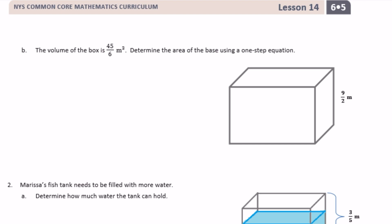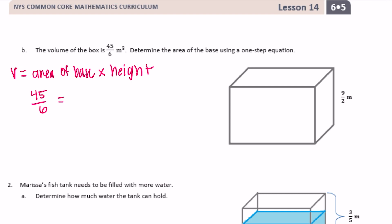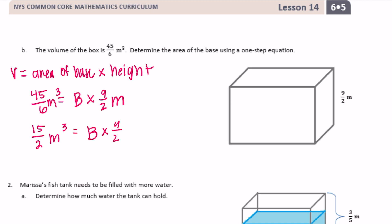Part B: the volume of the box is 45/6 meters cubed. Determine the area of the base using a one-step equation. Volume equals area of the base times height, so 45/6 equals the area of the base times 9/2 meters. Reduce 45/6 by dividing both by 3 to get 15/2. So 15/2 equals the area of the base times 9/2 meters. Divide by 9/2 to solve.